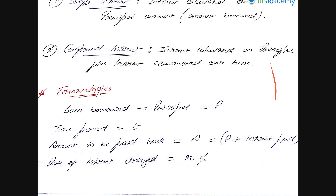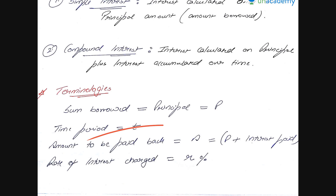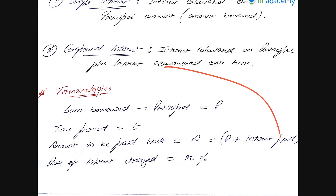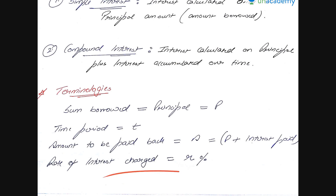There are a few key terminologies. First is the sum borrowed, also called the principal amount — the principal sum that is borrowed. Then there is the time period for which the money is lent by the lender or borrowed by the borrower. Then the amount to be paid back: for example, if I lend you 100 rupees for a year at 10%, you owe me 110 rupees — that is principal plus interest. Interest can be either simple or compound depending on the terms. The rate of interest charged is R percent, which in this case is 10%.